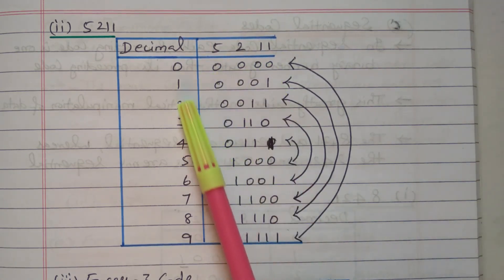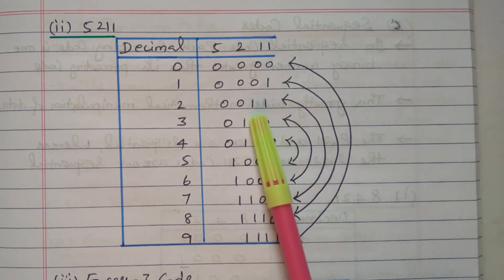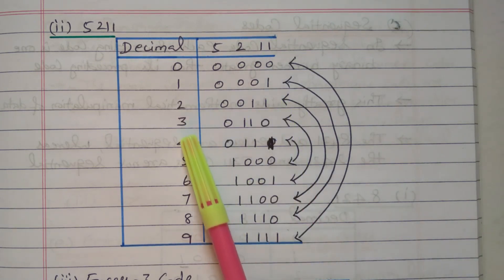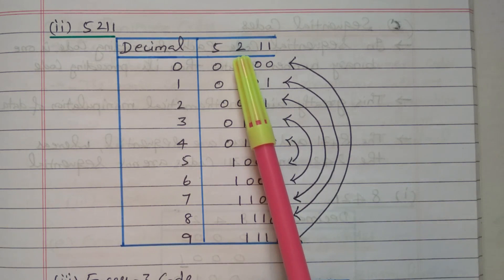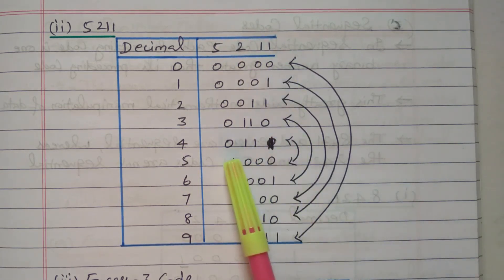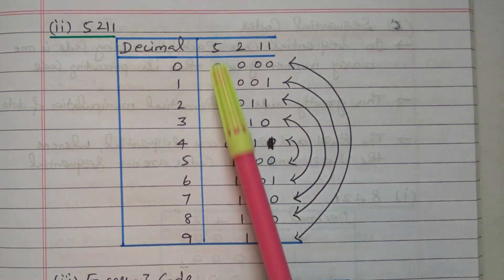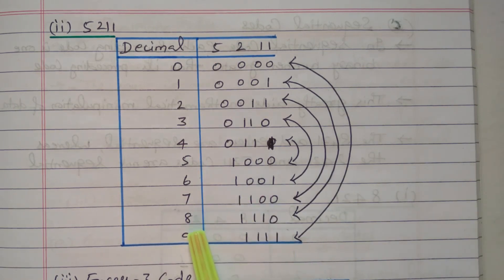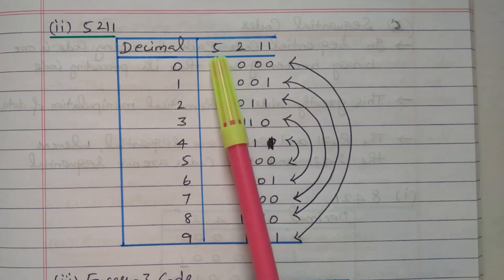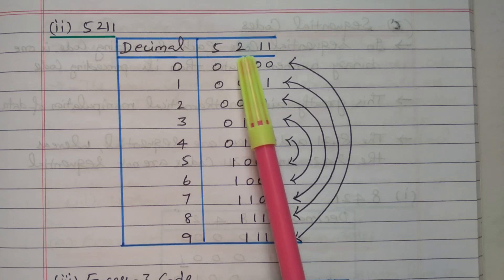Zero means all positions are 0. One means the last position is 1, others are 0, so we get 1. For two, the third and fourth positions are made 1 — one plus one equals two: 0,0,1,1. For three, the second and third positions are made 1 — two plus one equals three. For four, second, third, and fourth positions are 1 — two plus one is three, three plus one is four: 0,1,1,1. For five, the first position alone is 1, others are 0 — we get 5. For six, first and last: five plus one is six — code is 1,0,0,1. For seven, first and second: five plus two is seven — code is 1,1,0,0. For eight, first three positions: five plus two is seven, seven plus one is eight — code is 1,1,1,0. For nine, all digits are 1: five plus two is seven, seven plus one is eight, eight plus one is nine.